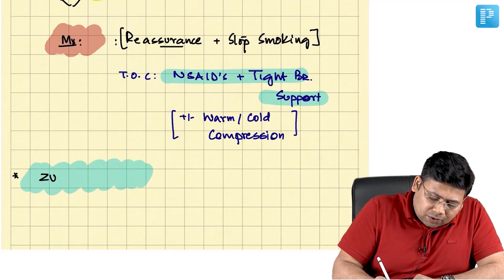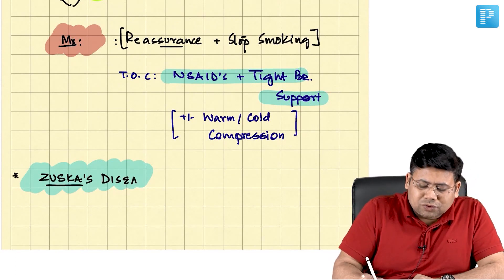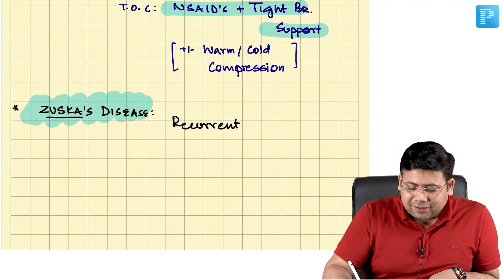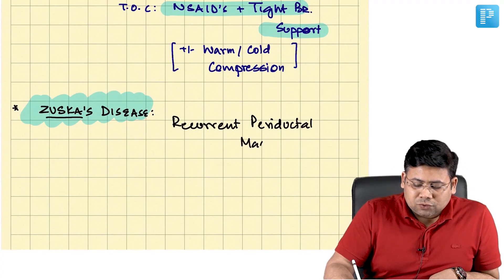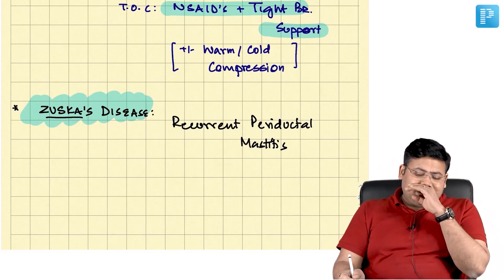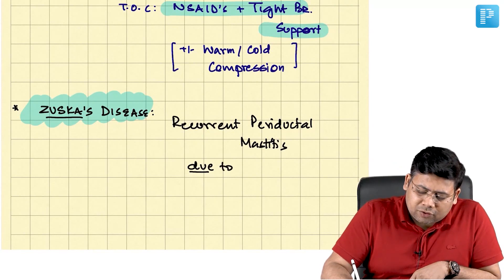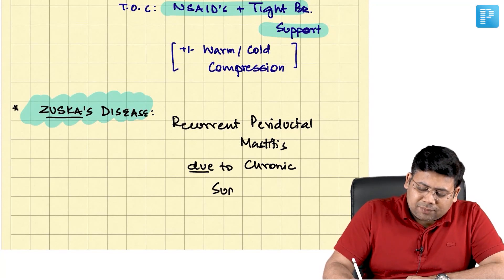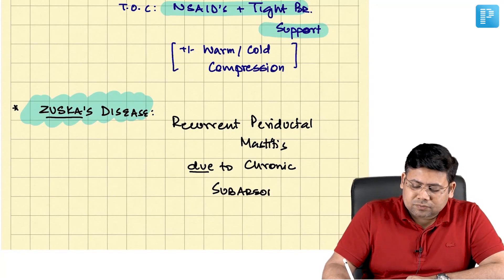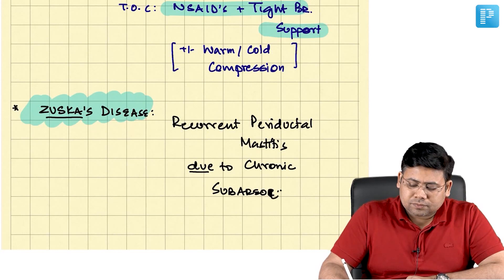Zuzka's disease is defined as recurrent periductal mastitis — specifically, recurrent periductal mastitis due to chronic subareolar mastitis. Let us see the concept of this Zuzka's disease.